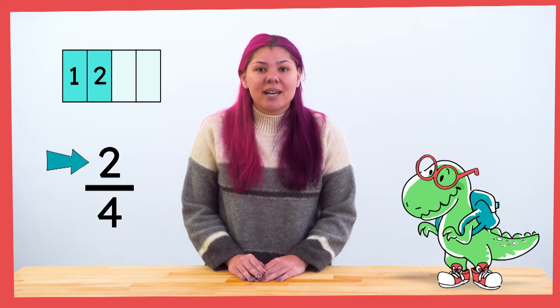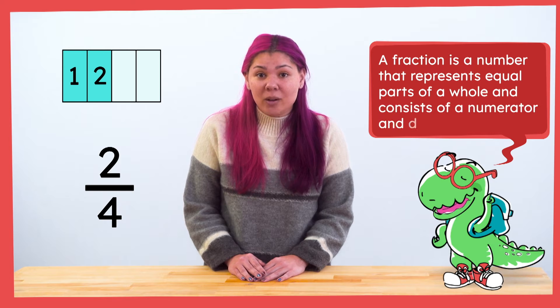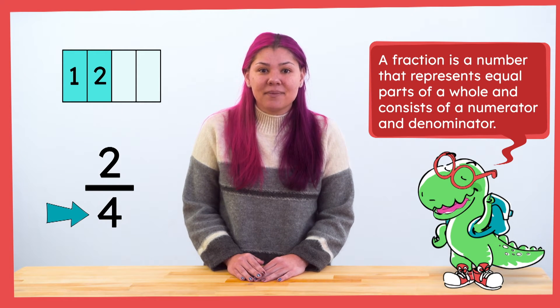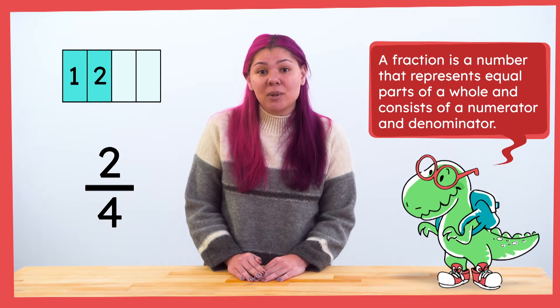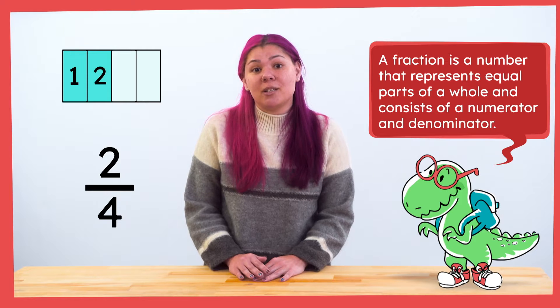To summarize: a fraction is a number that represents equal parts of a whole and consists of a numerator and denominator. The numerator is the number of units counted. The denominator is the amount of same-size units the whole was partitioned into. Knowing those words is going to be very helpful with solving this disagreement. Now that we have an understanding of fractions, let's look at the problem my friend and I are having.